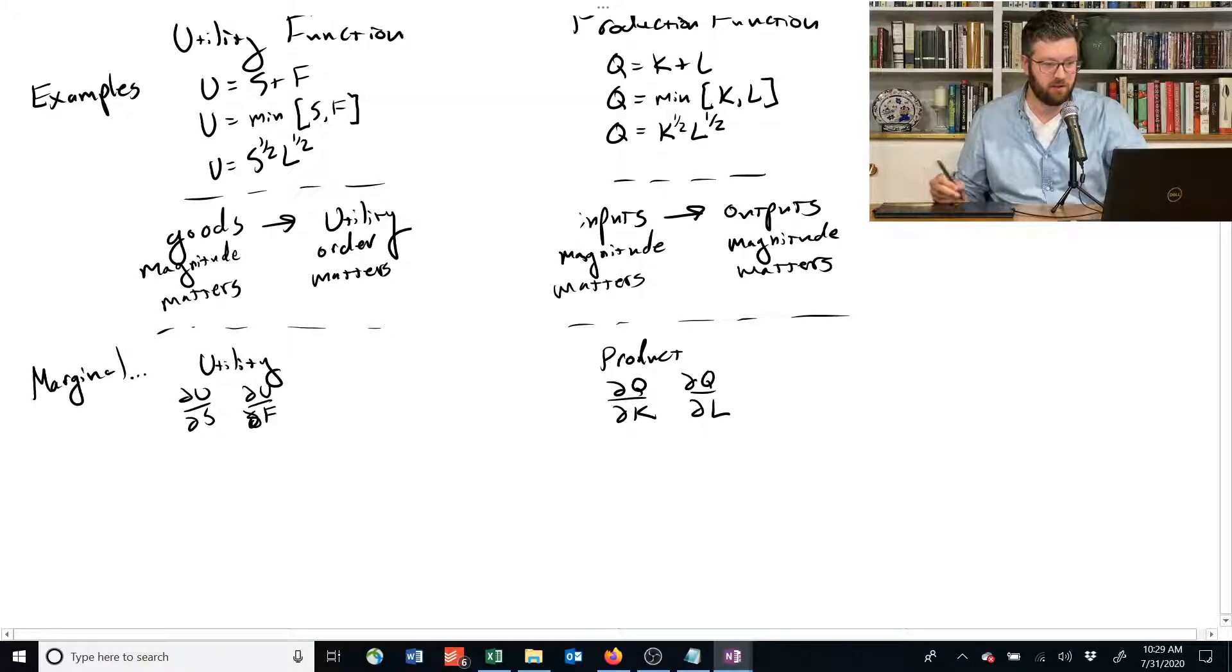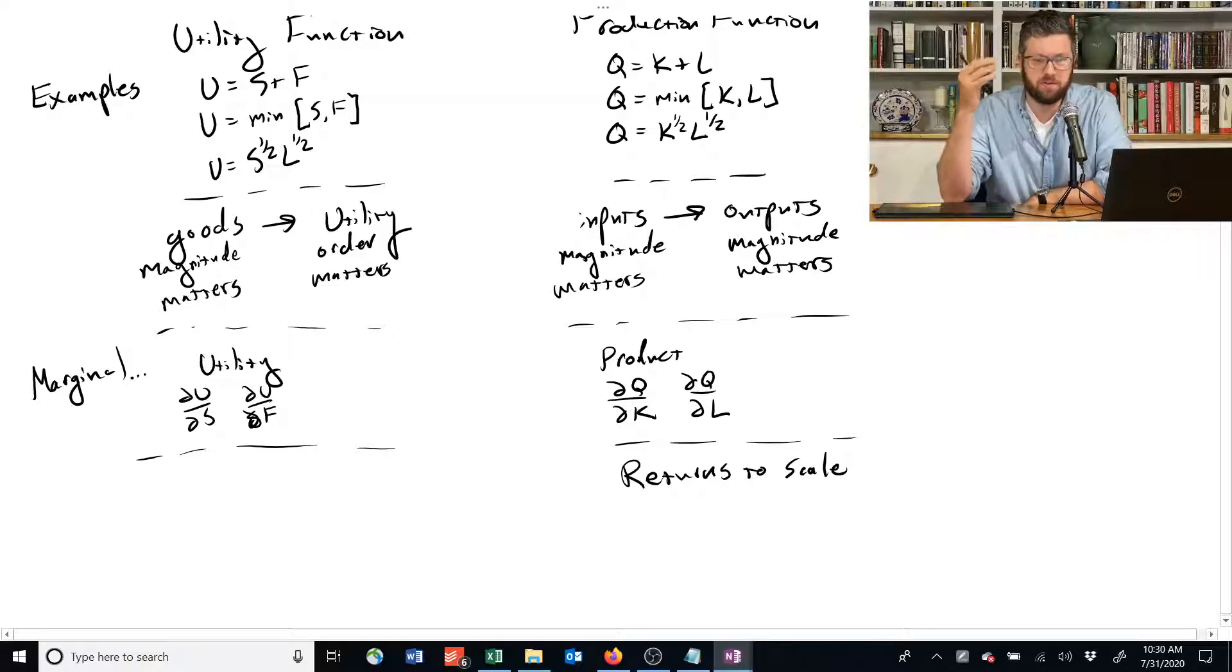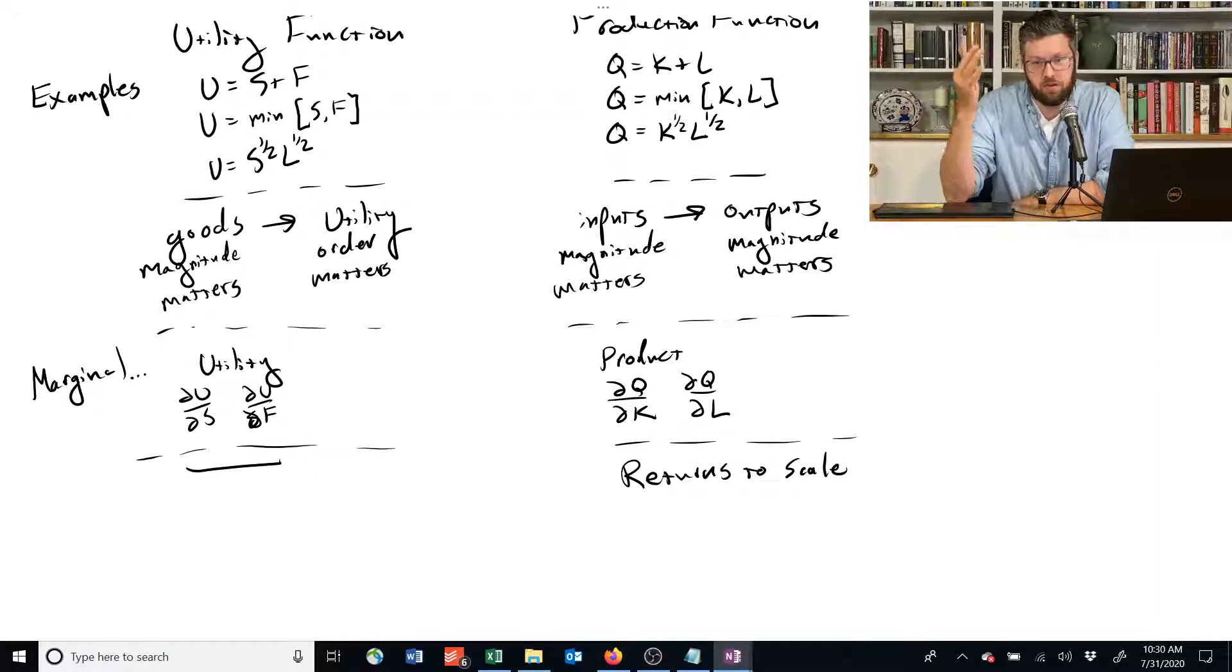This guy over here has returns to scale as an important property. That means if you double the inputs, does the output double? Does it more than double? We know it's going to go up, but how much? There's no such concept over here. And that's because we don't care about the magnitude of utility. We don't really care if you double all the inputs, does that more than double the utility or less than double the utility? Because all that matters is what the order of the utilities are. So we don't have that concept. So that's one difference.